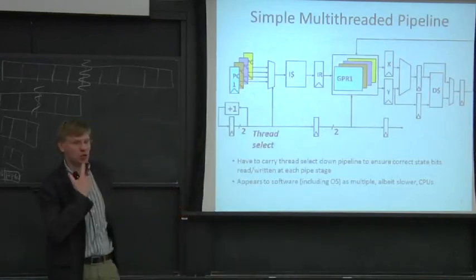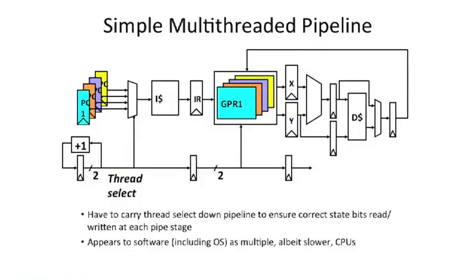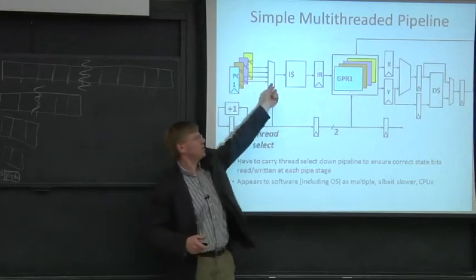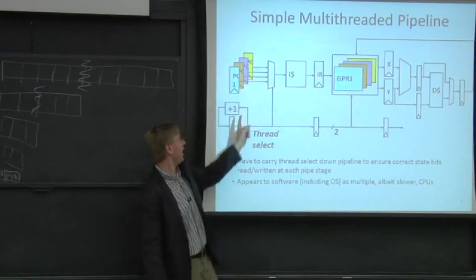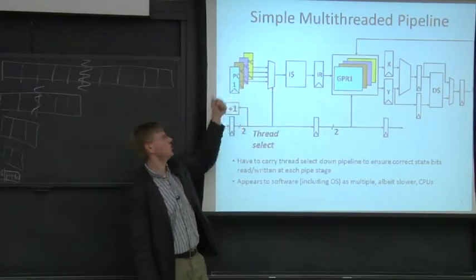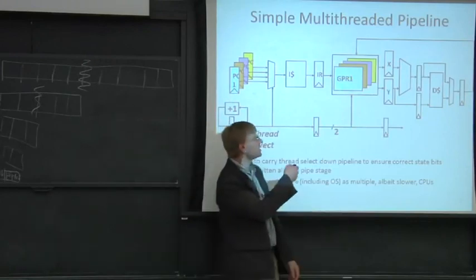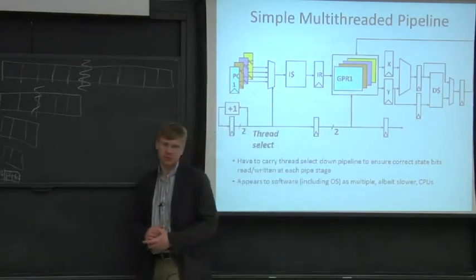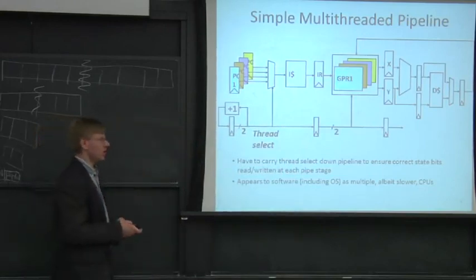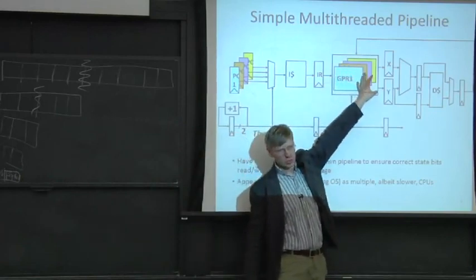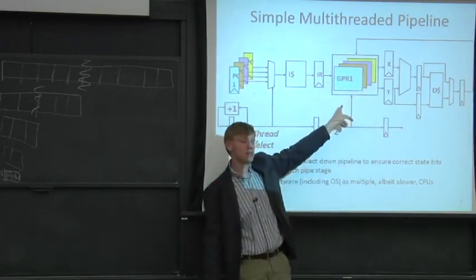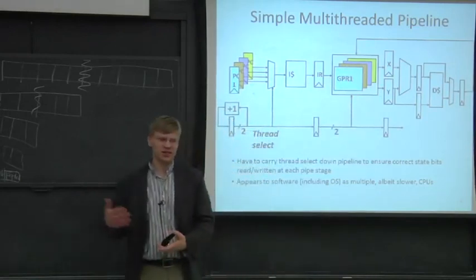As shown here, you have to copy the general purpose register file four times. And you have to copy the program counter four times. Then you have an incrementer out here in the front of the pipe, which chooses the thread ID or the thread select. In our simple case here, we're just going to keep incrementing this and choose one, two, three, four, one, two, three, four, and just continually does that. That's an index into which general purpose register file we're supposed to be accessing. Most of the architectures will actually put this together in one larger general purpose register file and then have this just be some addressing bits that are architecturally not visible.